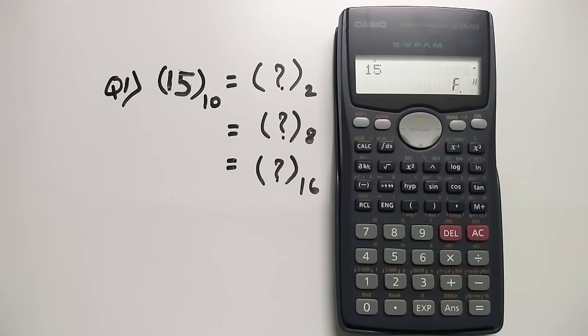So this was conversion of a decimal value to any of the other different number systems. Now similarly if you want to convert any other number system value, for example you want to convert a binary number to decimal, you can do that as well. I'll just show it quickly.